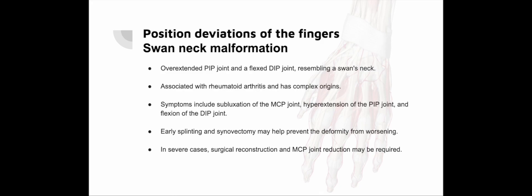Swan neck deformity: Swan neck deformity is a condition characterized by hyperextension of the middle joint and flexion of the end joint, giving the finger a swan-neck appearance. It is particularly prevalent in individuals with rheumatoid arthritis. The deformity manifests as a subluxation of the MCP joint, hyperextension of the PIP joint and flexion of the DIP joint. Early interventions with splinting and potential synovectomy can help prevent further worsening. In severe cases, surgical reconstruction of the extensor mechanism and reduction of the MCP joint may be necessary.